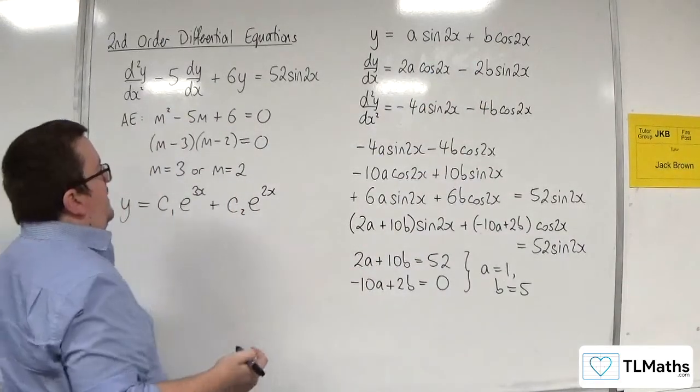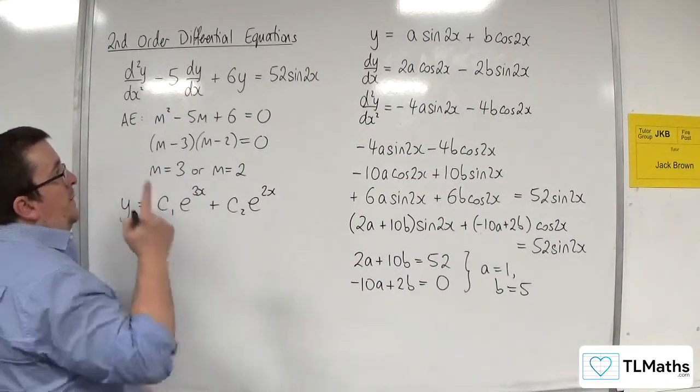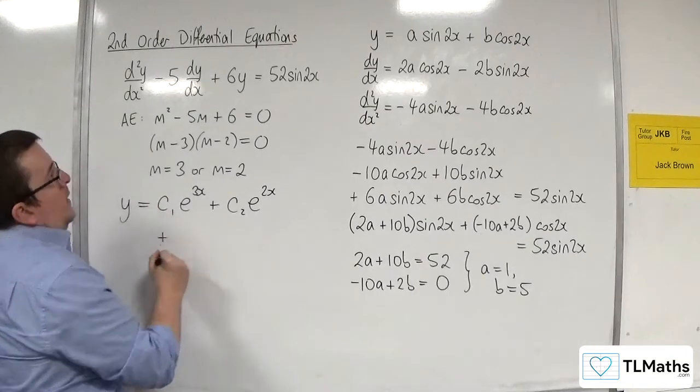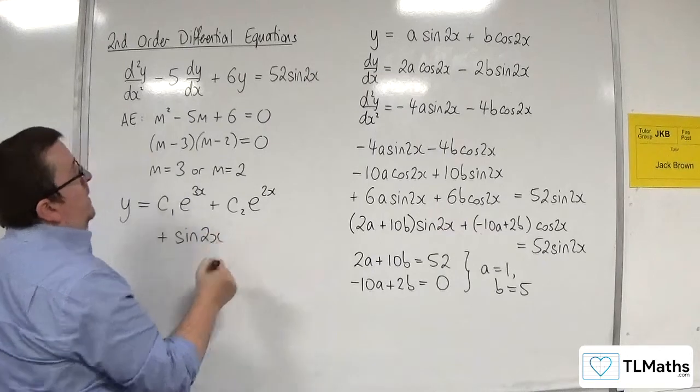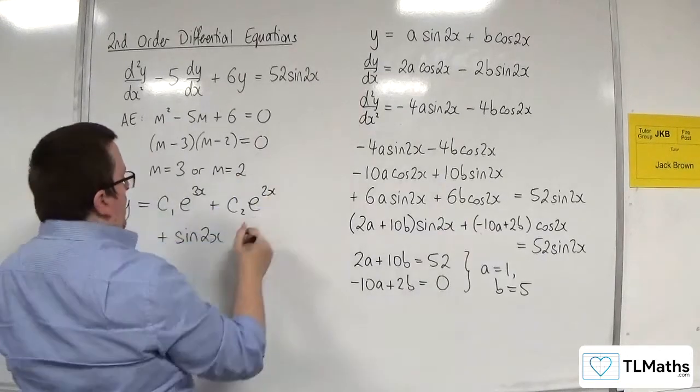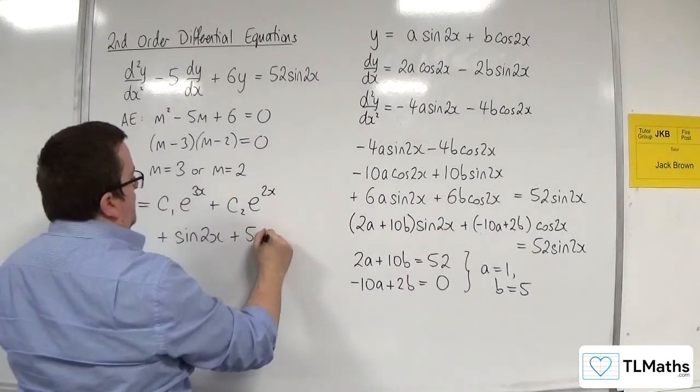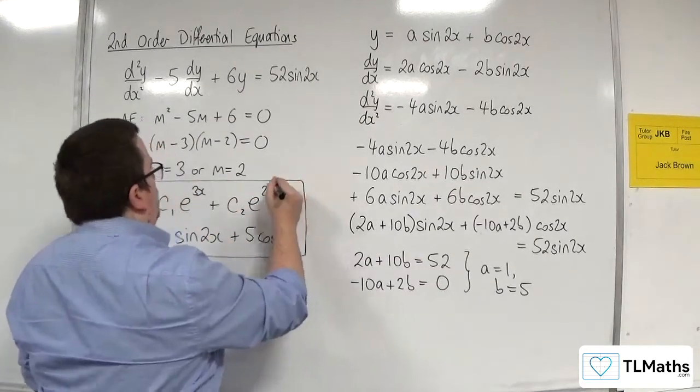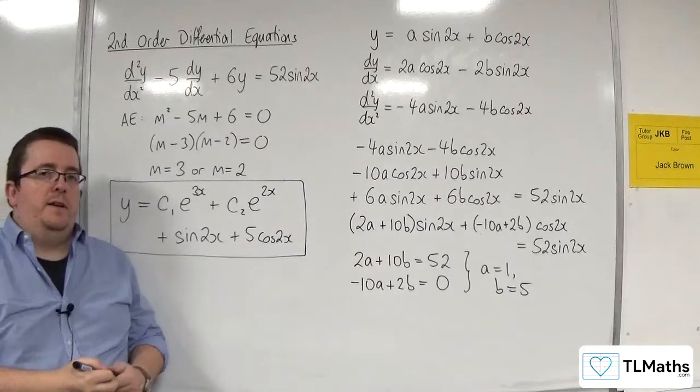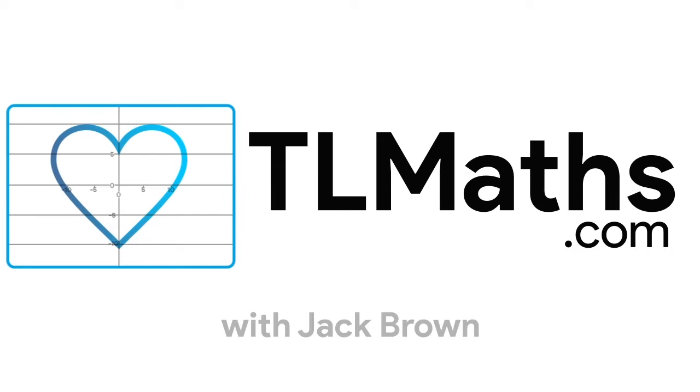So, we've got the y equals c1 e to the 3x plus c2 e to the 2x plus 1 lot of sine 2x plus 5 lots of cosine 2x. And so, this is the general solution to my differential equation. So, this is the general solution.